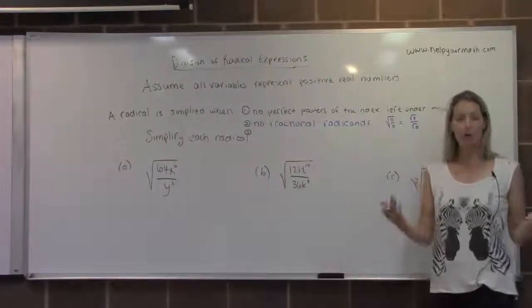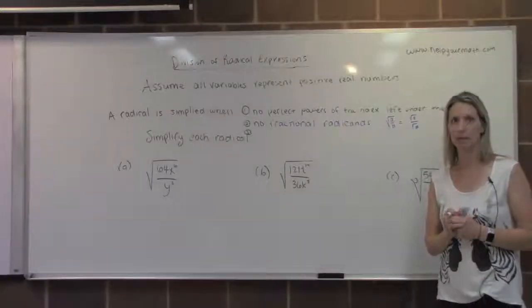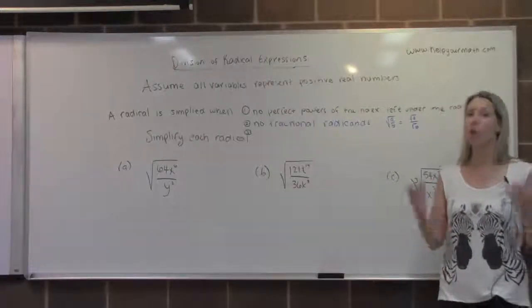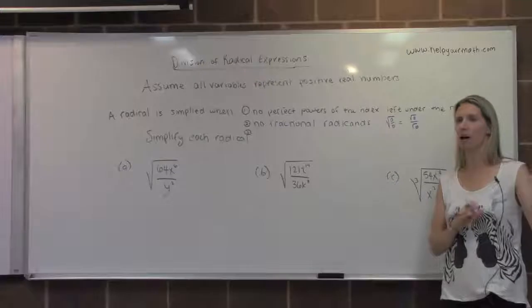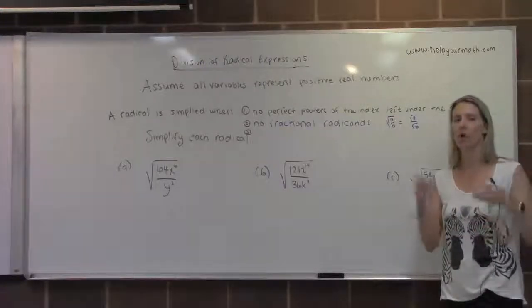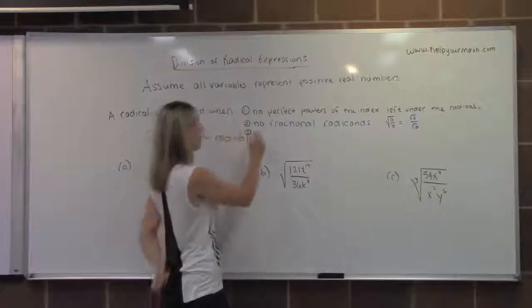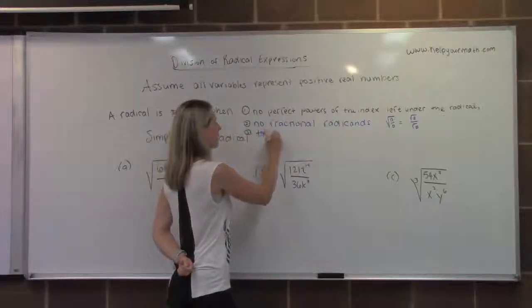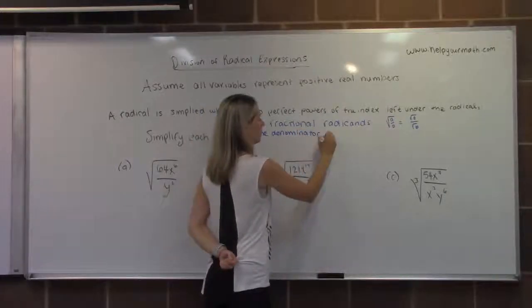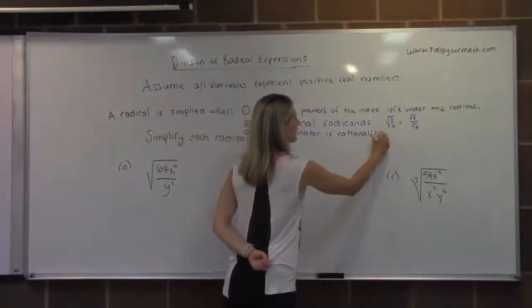The third rule about radical expressions is that we say the denominator must be normalized. What that means is we cannot have any radicals left in the denominator. In the next video, we're going to talk about other strategies for rationalizing the denominator. So the third thing is that it's simplified when the denominator is rationalized. That's basically just a fancy way of saying there's no radicals in the denominator.